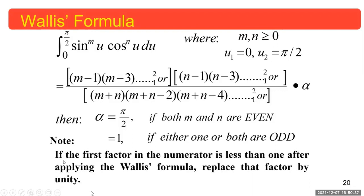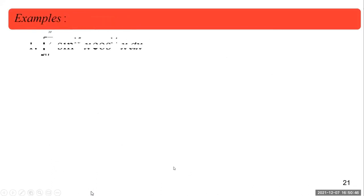Note: if the first factor in the numerator is less than 1 after applying Wallis's formula, replace that factor by unity. Here are some examples.